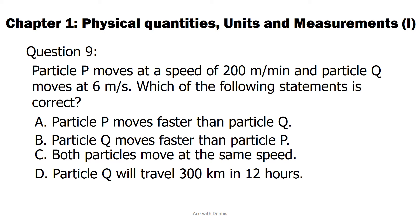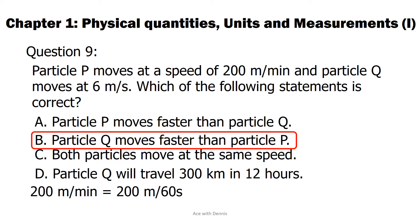The answer is B. Particle Q moves faster than particle P. 200 meters per minute equals 200 meters divided by 60 seconds. The result is 3.33 meters per second. Hence particle Q moves faster than particle P. Distance traveled by particle Q in 12 hours equals 6 meters per second multiply by 12 hours multiply by 3600 seconds. The result is 259.2 kilometers.